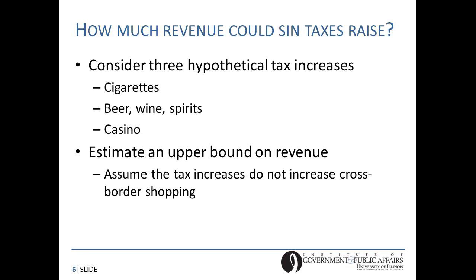One of the things I consider in my analysis is to answer the question: how much revenue could the state of Illinois raise by increasing the levels of its sin taxes? I consider three hypothetical tax increases — on cigarettes, alcohol, and casino gambling — and for simplicity, I assume that these tax increases do not increase cross-border shopping, meaning they don't cause individuals to purchase these goods in neighboring states at a higher rate than they already do. By making that assumption, I'm essentially estimating an upper bound — the maximum amount of revenue the state could raise by increasing these taxes.